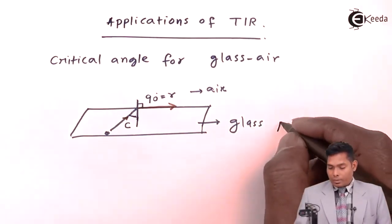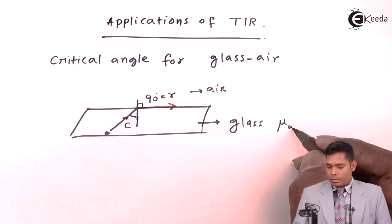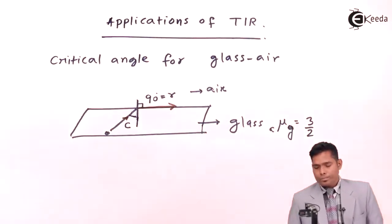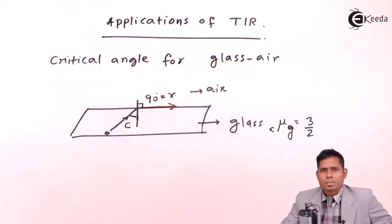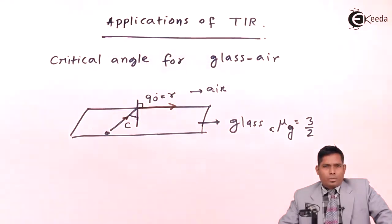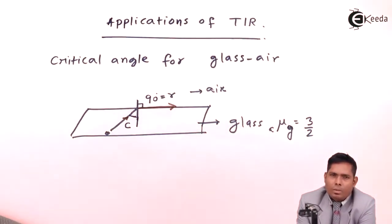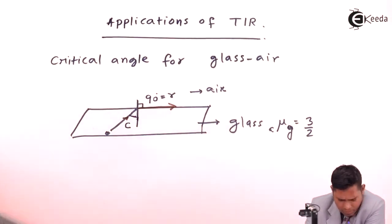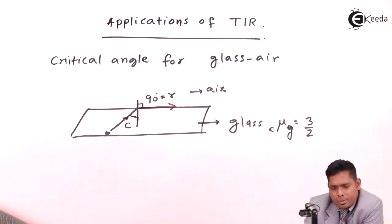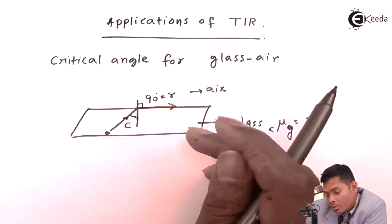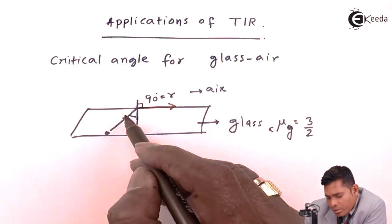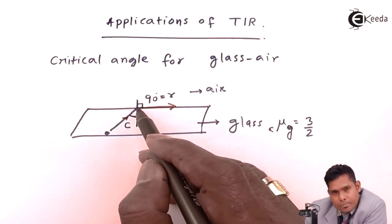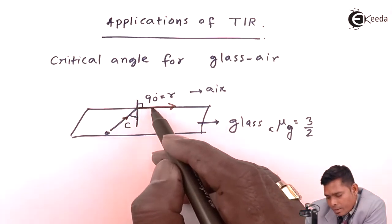We also know that the refractive index of glass with respect to air is 3/2 — not all glasses have the same value, but mostly it is 1.5 for crown glass. Now let us find, if this glass has refractive index 1.5, what is the critical angle — that is, with what angle of incidence the ray must strike the glass-air surface so that the refracted ray moves along the surface.